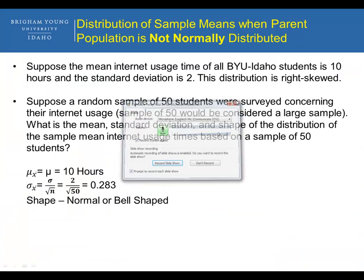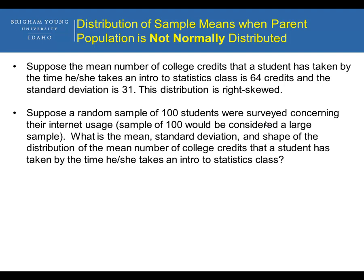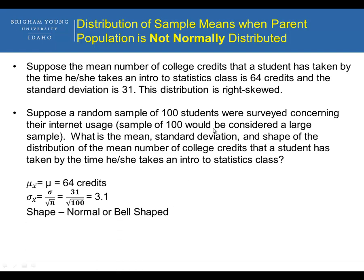Now try the next problem yourself. Find the mean, standard deviation, and shape of the distribution of the mean number of college credits a student has taken by the time he or she takes an intro to stats class. The mean is 64, standard deviation is 31, and the distribution is right-skewed. With a sample size of 100: the mean of the sample means equals 64; the standard deviation is 31 divided by the square root of 100, giving 3.1; and the shape is normally distributed because the sample size is large enough.